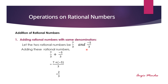When the denominators are the same, we add only the numerators and we take a common denominator. We write 7 upon 3 plus minus 5 upon 3. Taking the common denominator and writing the numerators 7 plus minus 5, we get 2 upon the common denominator 3.